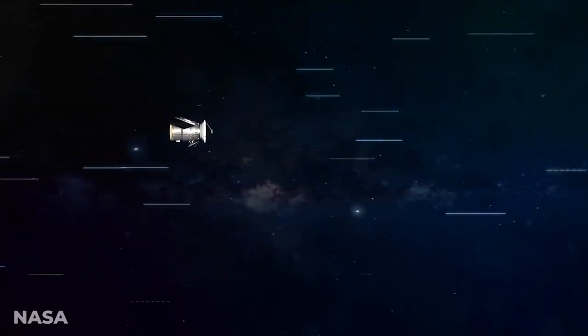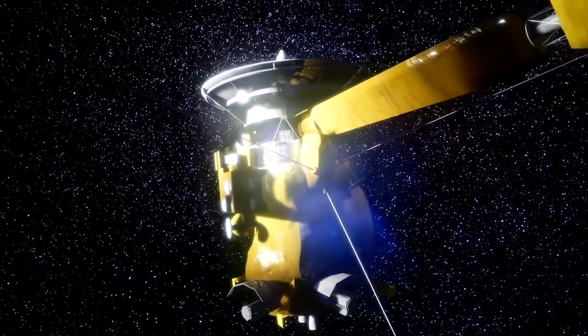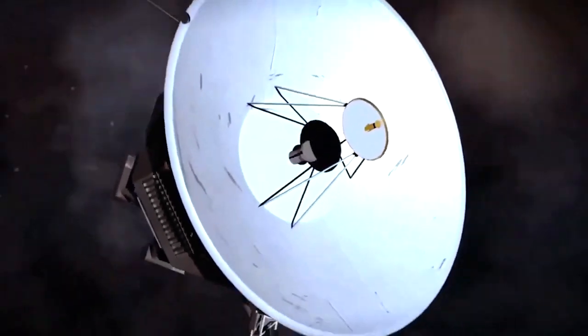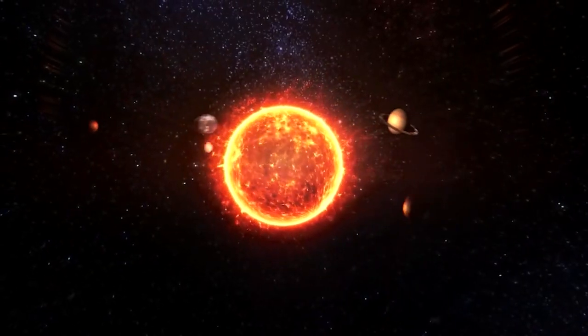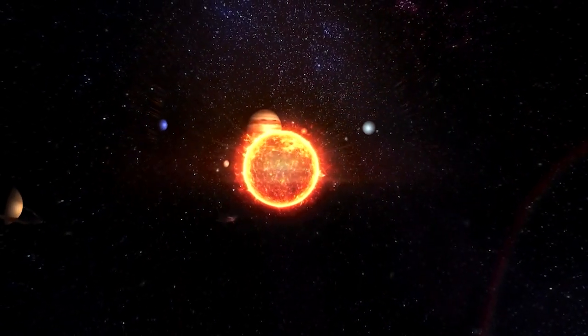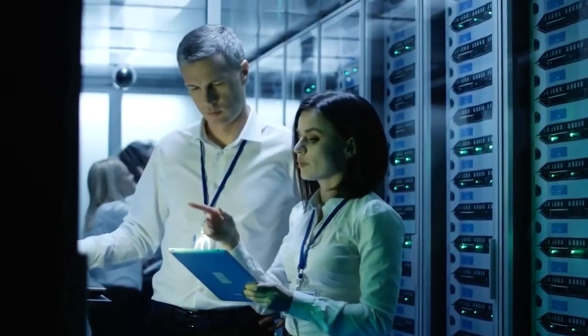On the other hand, Voyager 2 is observed to be moving at a velocity of around 34,000 miles per hour relative to the sun and is more than 11.8 billion miles from the Earth. Data from 2019 suggests that Voyager 2 has also gone interstellar.